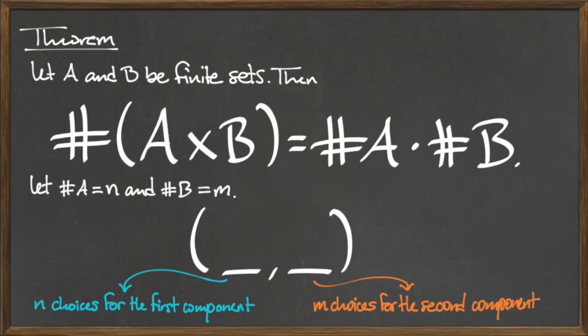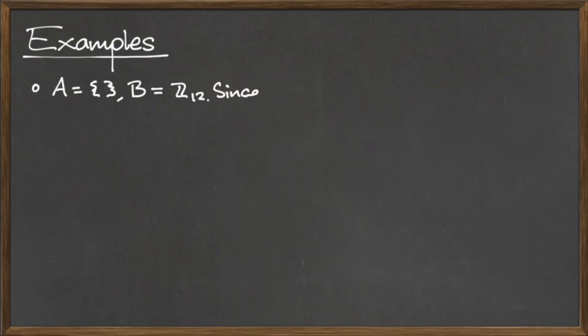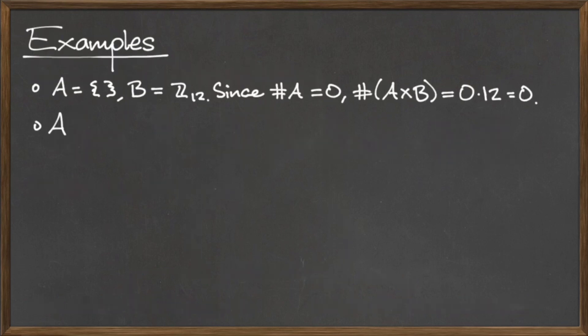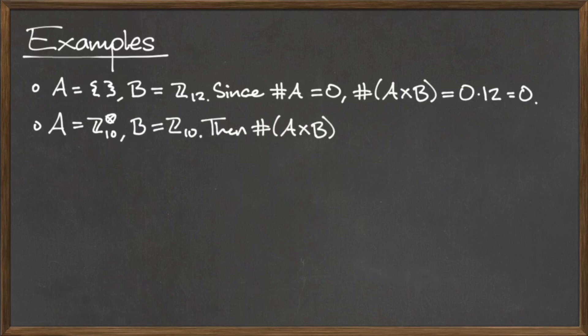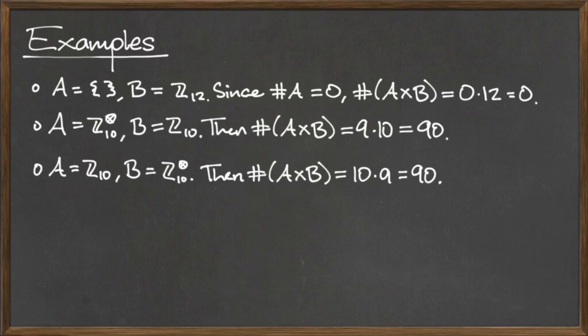Here are some examples to illustrate the previous theorem. For the first example, the cardinality of the Cartesian product A cross B is equal to 0, since A is equal to the empty set, and the empty set contains 0 elements.